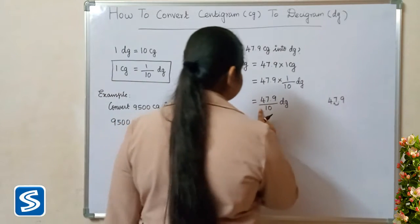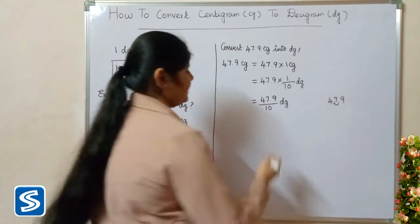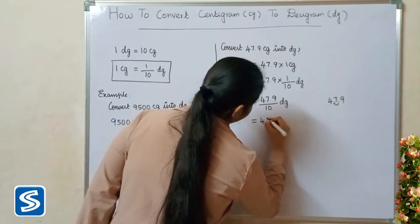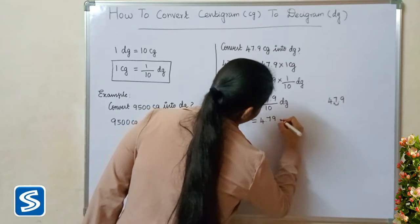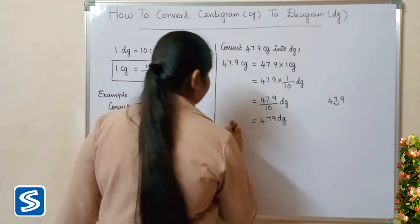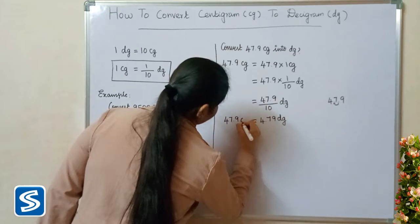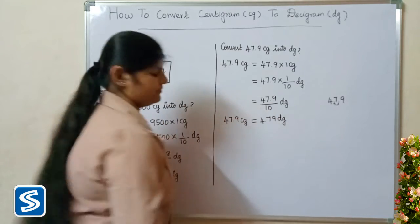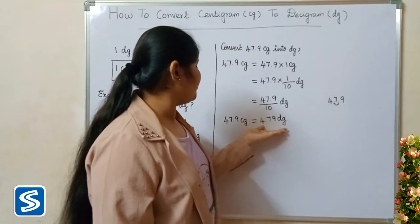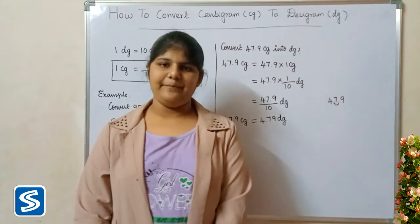So when we divide 47.9 by 10, our answer will be 4.79 decigrams. So 47.9 centigrams is equal to 4.79 decigrams. Next we will take another example.